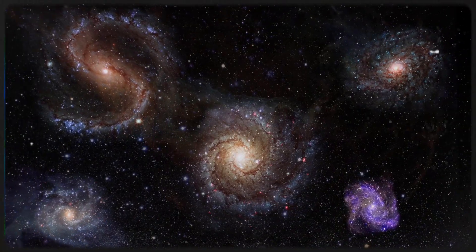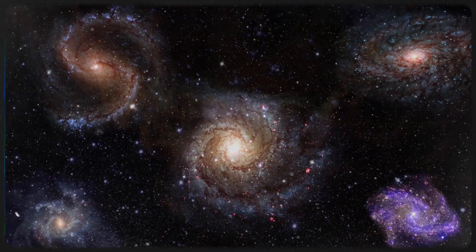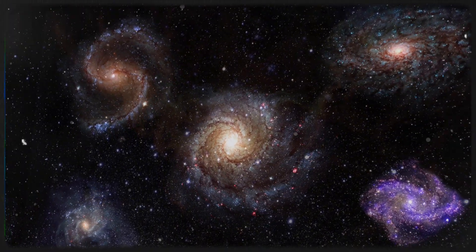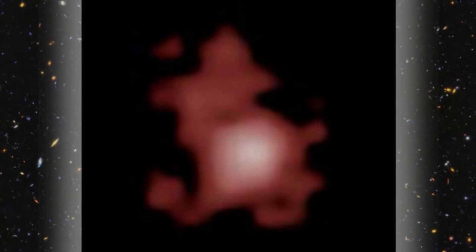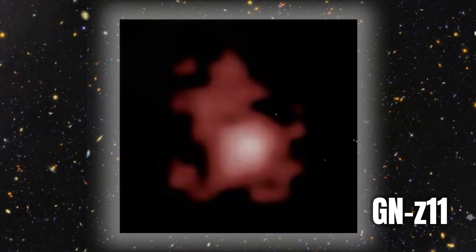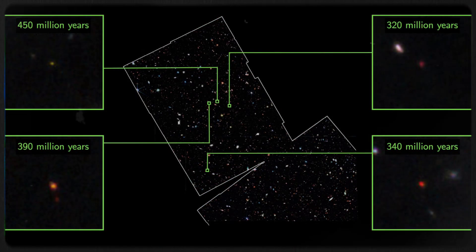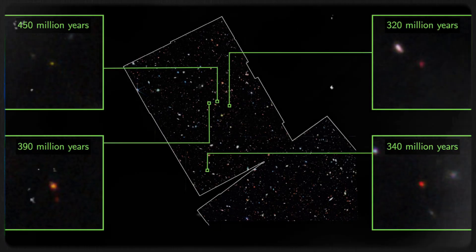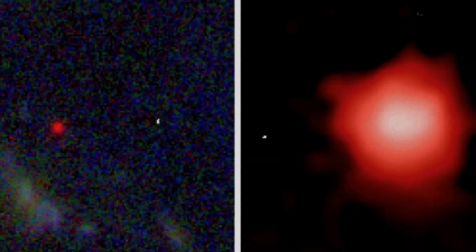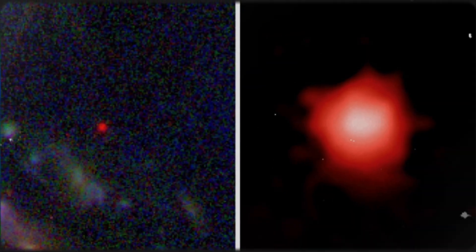While these newly discovered galaxies still need to undergo rigorous peer review, the Webb telescope's observations are already rewriting the narrative of the early universe. Until recently, the most distant known galaxy was GNZ 11, a discovery made by the Hubble Space Telescope. This galaxy, which dates back to approximately 400 million years after the Big Bang, was thought to be one of the universe's earliest formations. However, Webb has now shattered this record, identifying four even older galaxies, including GSC 13, which currently holds the title of the farthest and potentially oldest galaxy ever observed.